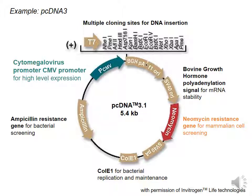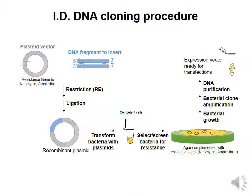You will insert and clone it into bacteria, isolate it from bacteria, and then transform it into mammalian cells. This is what we do in the last step — the DNA cloning procedure — which consists of taking the plasmid or expression vector.